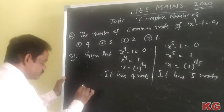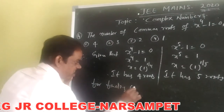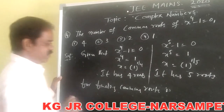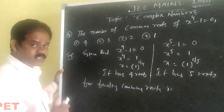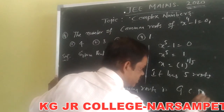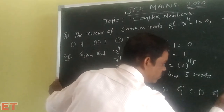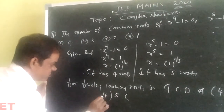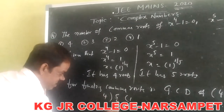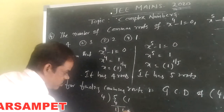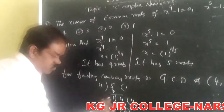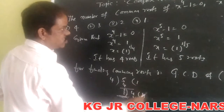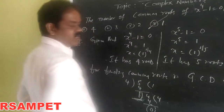For finding the common roots, the simplest method is to find the GCD of 4 and 5. GCD means greatest common divisor. To find GCD of 4 and 5 by division: 5 divided by 4 gives quotient 1, remainder 1; then 4 divided by 1 gives remainder 0. So GCD of 4 and 5 equals 1. Therefore it has only 1 common root, and the fourth option is the correct answer.